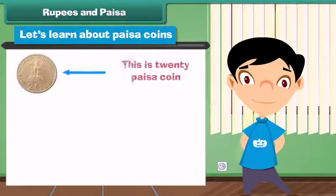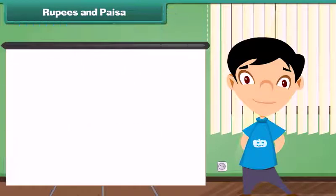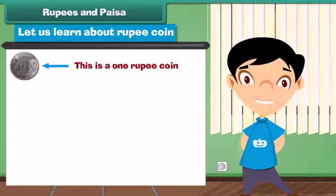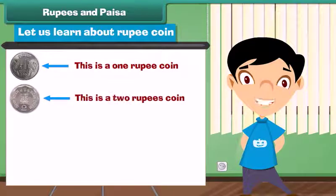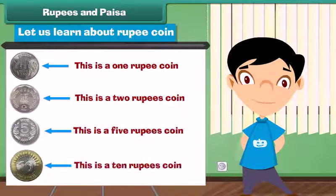This is a 20 paise coin. This is a 50 paise coin. Let us learn about rupee coins. This is a 1 rupee coin. This is a 2 rupees coin. This is a 5 rupees coin. This is a 10 rupees coin.